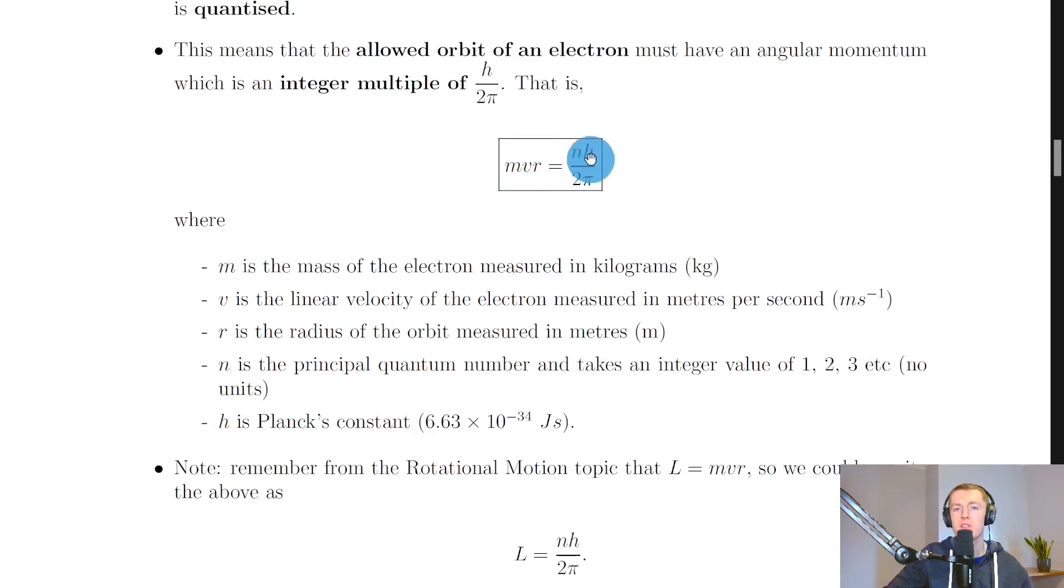So we have mvr equals nh over 2π where m is the mass of the electron measured in kilograms. Remember that value is 9.11 times 10 to the minus 31 kilograms from your data sheet. v is the linear velocity of the electron in meters per second. r is the radius of the orbit measured in meters. n is the principal quantum number and takes an integer value of 1, 2, 3, etc. and also has no units. And lastly, h is Planck's constant with a value of 6.63 times 10 to the minus 34 joule seconds from the data sheet.